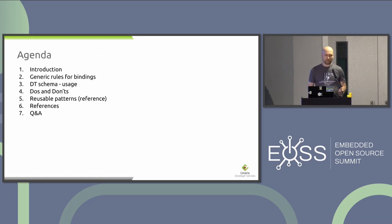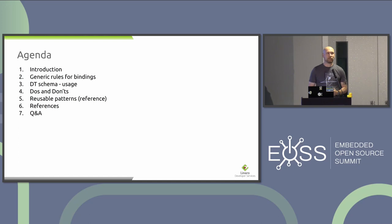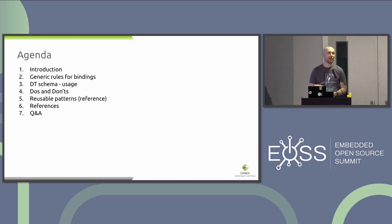What will this topic be about? I'll say a few words about the generic rules for bindings in the Linux kernel, show how to use the DT schema, and explain what DT schema is. The main part will be do's and don'ts — what I expect from bindings as a reviewer. The presentation finishes with reusable patterns and references you can use in your upstreaming process and work.